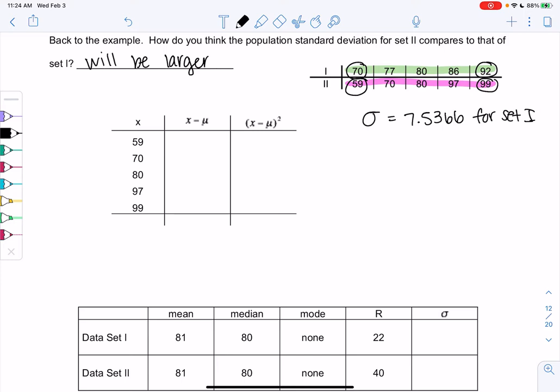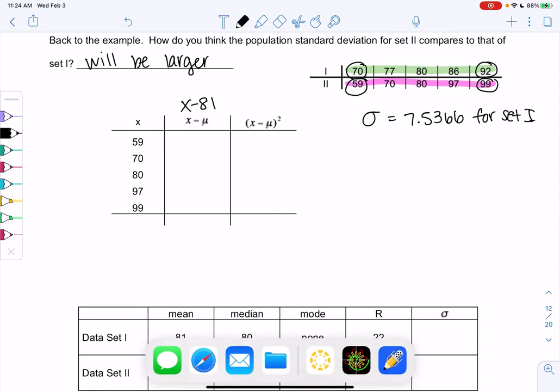So let's go ahead and go through that formula again. What we're going to do is we're going to do the data value minus the mean. We found that the mean was 81, so we'll do each data value minus the mean.